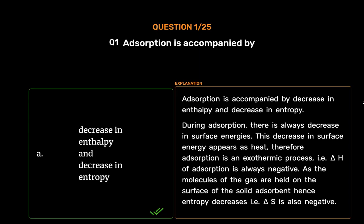Adsorption is accompanied by decrease in enthalpy and decrease in entropy. During adsorption, there is always a decrease in surface energy. This decrease in surface energy appears as heat, therefore adsorption is an exothermic process, i.e., ΔH of adsorption is always negative. As the molecules of the gas are held on the surface of the solid adsorbent, entropy decreases, i.e., ΔS is also negative.